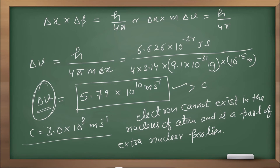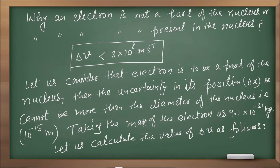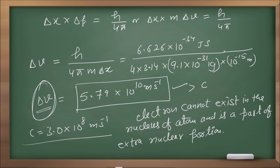This question can appear in exams. If asked why an electron is not present in the nucleus, write it like this: Let us consider that the electron is to be part of the nucleus. If it is part of the nucleus, then the uncertainty in its position is the size of the nucleus, which is of the order of 10⁻¹⁵ meters. That is delta x. Therefore, the minimum value of delta v we calculated comes out to be greater than the speed of light, which is not possible. That is why the electron cannot exist in the nucleus and is part of the extra-nuclear portion.